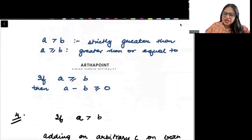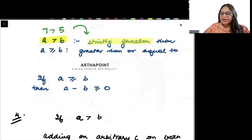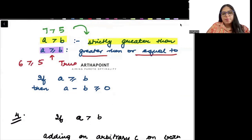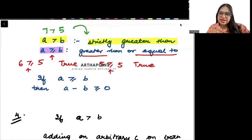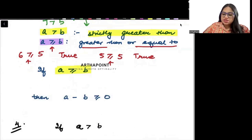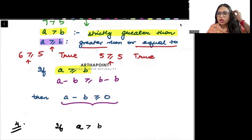When we say a is greater than b, like 7 is greater than 5, the term we use is 'strictly greater than.' And when we say a greater than or equal to b, we use 'greater than or equal to.' For example, 6 is greater than or equal to 5 is true, and 5 is also greater than or equal to 5 — because the equal to case is included. If a is greater than or equal to b, I subtract b from both sides and get a minus b greater than or equal to 0.